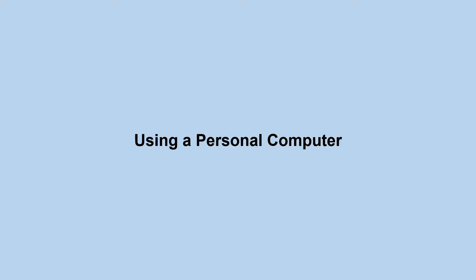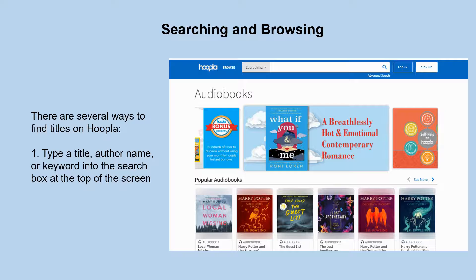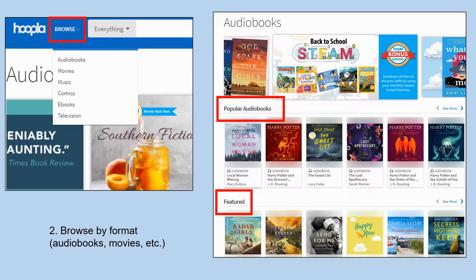Now we're going to discuss navigating Hoopla using a browser on your personal computer. The features of Hoopla just look different depending on the device you're using, so we will go over using the browser first. There are several ways to find titles on Hoopla. You can type in a title, author name, or keyword into the search box at the top of the screen. You can also browse by format if you don't want to look by a specific title — just click on the browse tab at the top and you'll get a drop-down where you can choose from audiobooks, movies, etc., and see groupings such as popular, featured, and more.